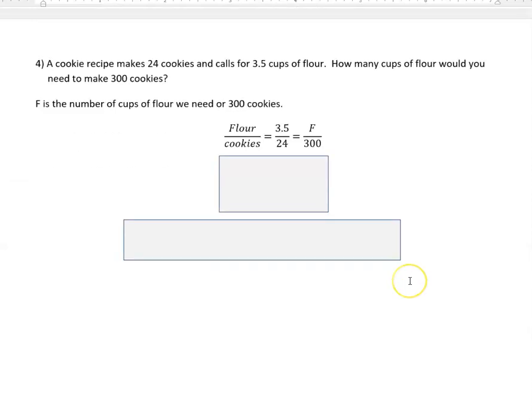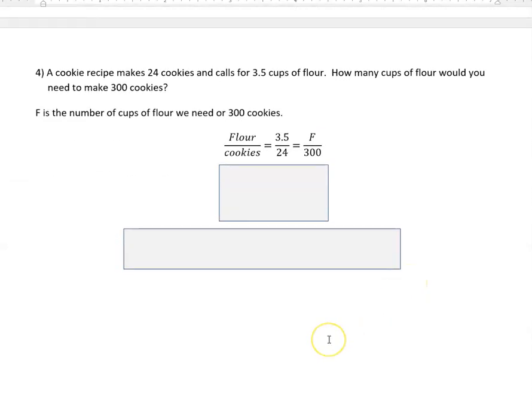The last question says a cookie recipe makes 24 cookies and calls for three and a half cups of flour. How many cups of flour would you need to make 300 cookies? F is the number of cups of flour we need for 300 cookies, so I'm using F in here. I've chosen to put flour over cookies. Again, you could put cookies over flour, it's going to give you the same answer if you're consistent all the way across.